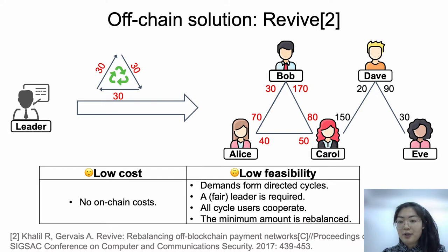But Revive suffers from low feasibility. Firstly, users' demands must form directed cycles in the network to enable the rebalancing. Secondly, a leader is required. Thirdly, all cycle users need to cooperate to complete the rebalancing, and any non-cooperation would lead to failure. Moreover, only the minimum demand along the cycle is rebalanced, which is not satisfactory for most users.